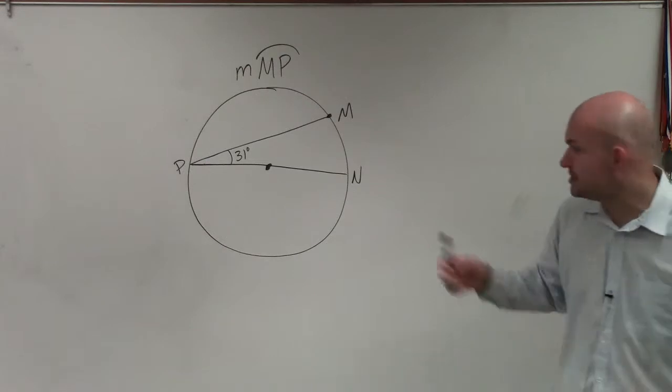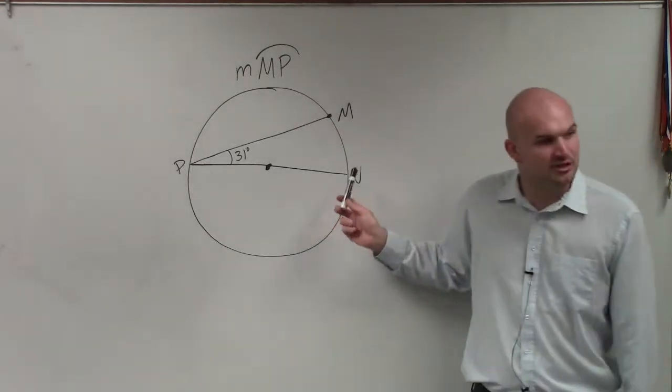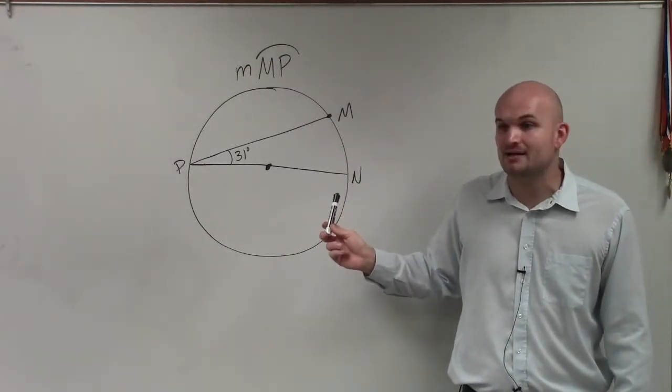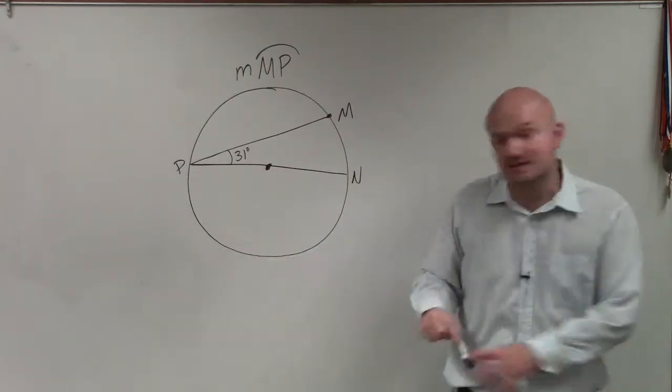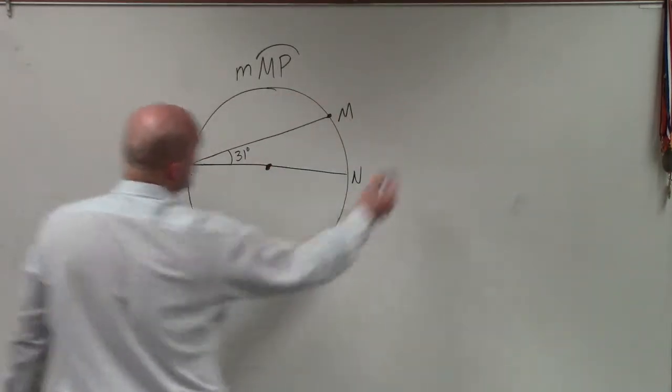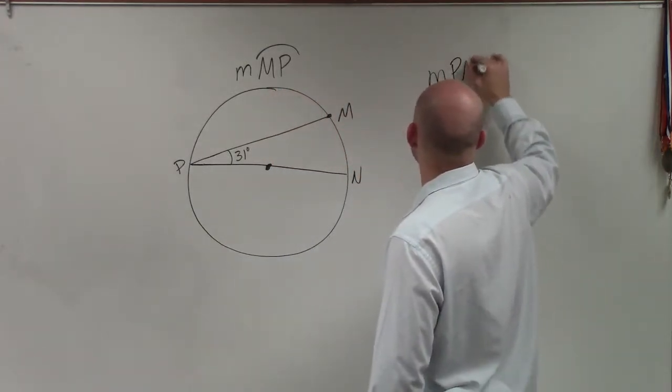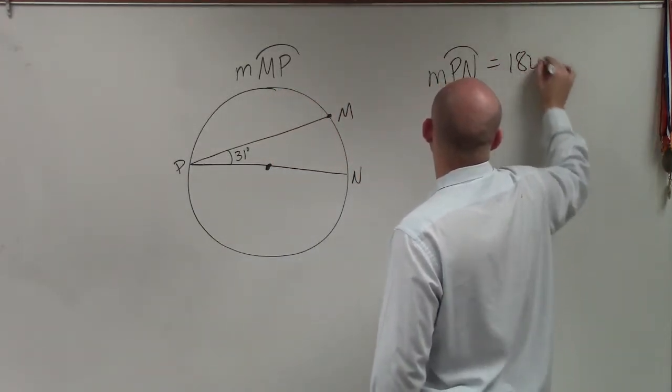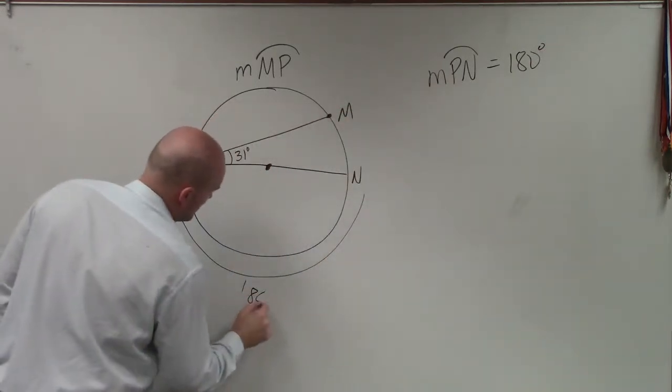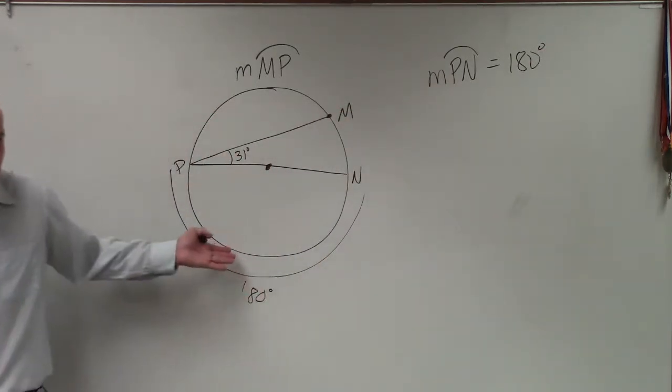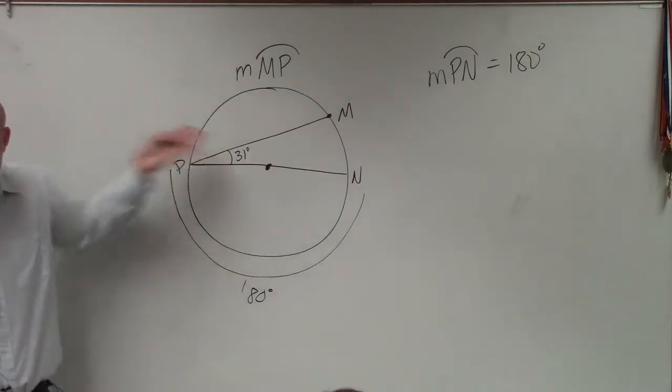When I automatically look at this, I see that PN is going to be a diameter. This cuts the circle in half. Therefore, that creates a semicircle. So I know that the measure of arc PN is equal to 180 degrees. Does everybody understand that? It's a semicircle. We talked about semicircles, 180 degrees.